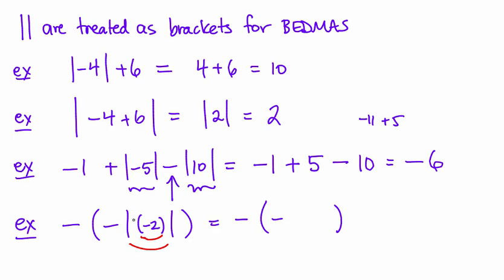So really I'm dealing with this stuff in green here, and that is the distance from 0 of negative 2, which is 2 units. And so negative 2 is the new number inside these brackets, and negative negative 2 is actually positive 2.